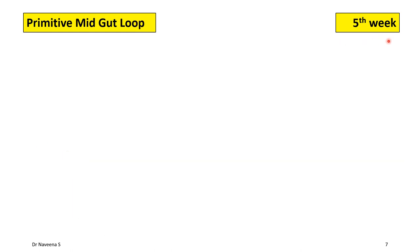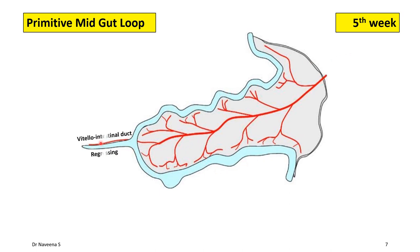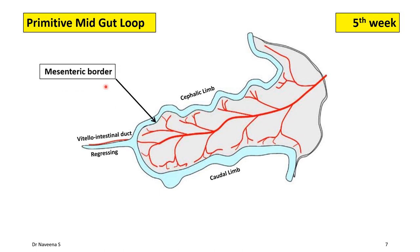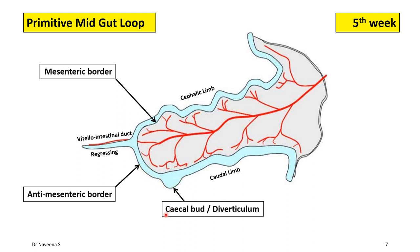During the 5th week, the primitive midgut loop grows in length, whereas the vitello-intestinal duct starts regressing. The cephalic limb and caudal limb of the midgut loop now show two clear borders: the dorsal border to which the dorsal mesentery is attached, called the mesenteric border, and the ventral border free of any mesentery attachment, called the anti-mesenteric border. The anti-mesenteric border of the caudal limb, close to the vitello-intestinal duct, gives rise to an endodermal outgrowth known as the cecal bud or cecal diverticulum, which in future gives rise to the cecum and vermiform appendix.